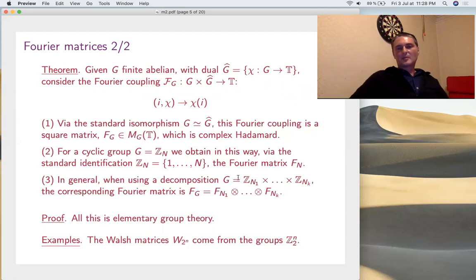For instance, if you use a decomposition like this in the product of cyclic groups, g hat will have the same decomposition. If you use the isomorphism, what you have here is the matrix, a square matrix because the i index varies in g, the chi varies in g hat, but g hat have the same cardinality. So, we get a square matrix. Of course, it's in T because the characters have, by definition, values in T and this is complex Hadamard. That's just very elementary group theory. You just compute. The orthogonality works, no problem.